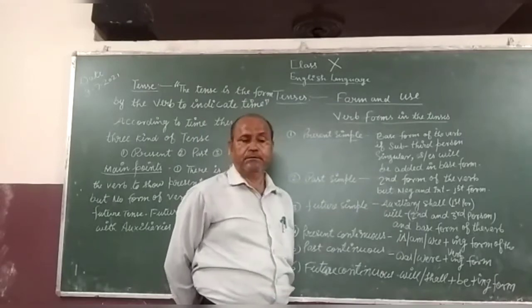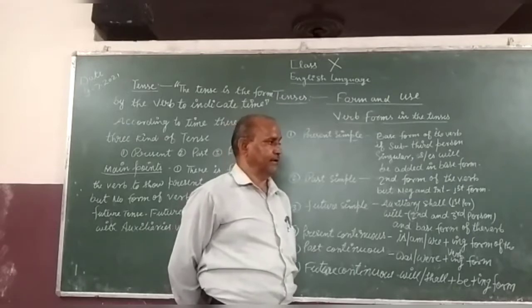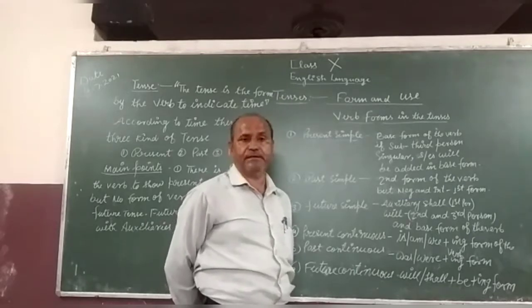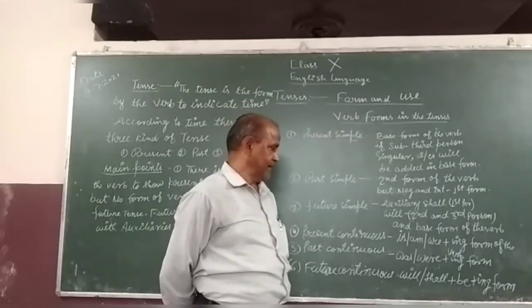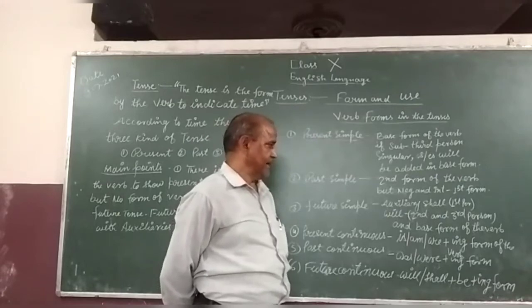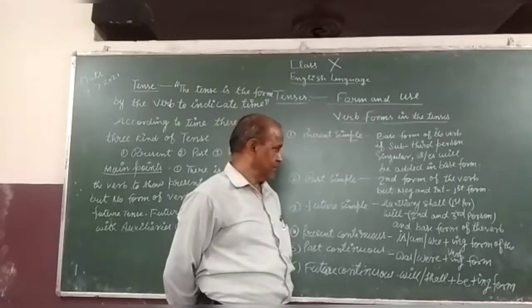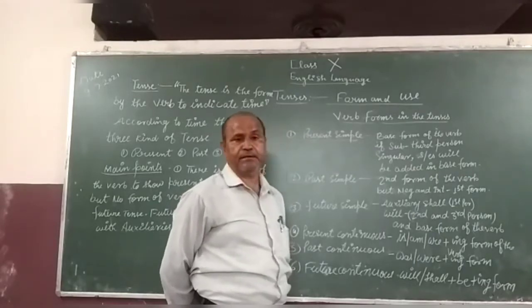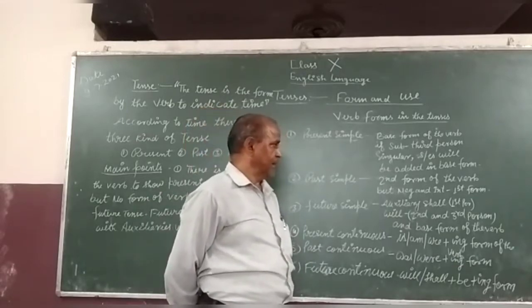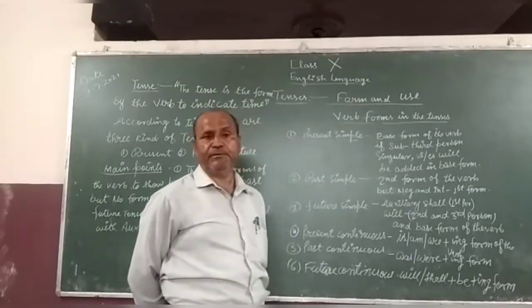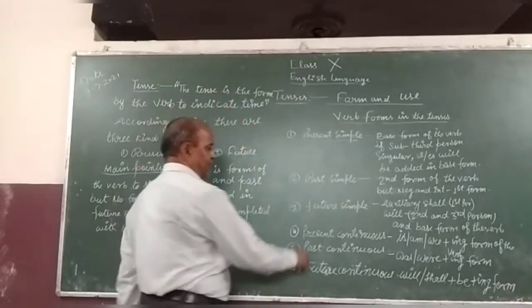There are two kinds of auxiliary verbs: primary auxiliary or modern auxiliary. So modern auxiliary will be used in future tense shall and will. Second and third person of the subject will be used as a modern auxiliary. And if the subject is first person, shall will be used in the sentence.